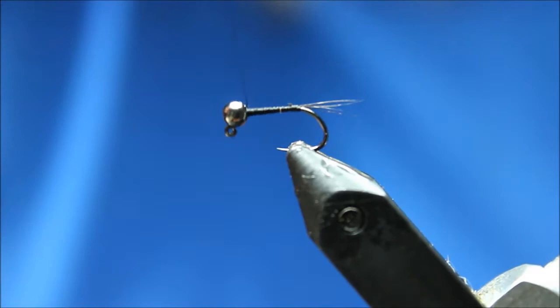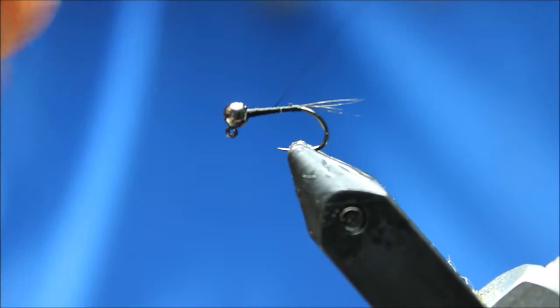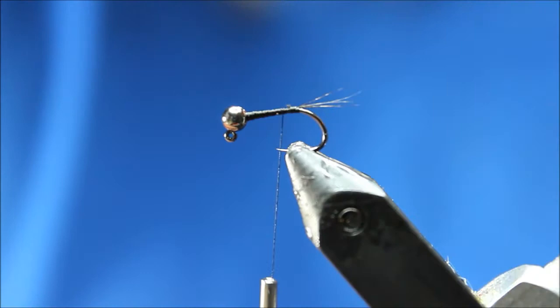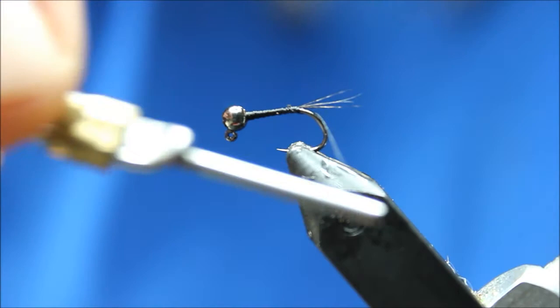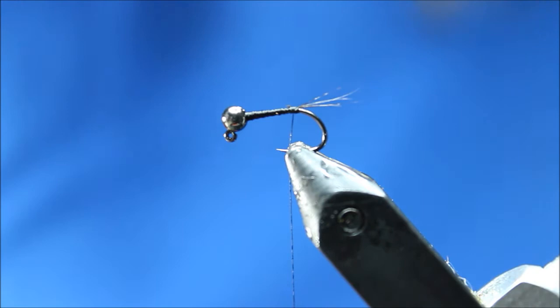We'll build up a little bit of a thread base and tapered body. This is a pretty sleek fly so it should sink quickly. One thing you can do also is if you want that tail to splay, take a loose wrap underneath. Sometimes that'll draw that out.